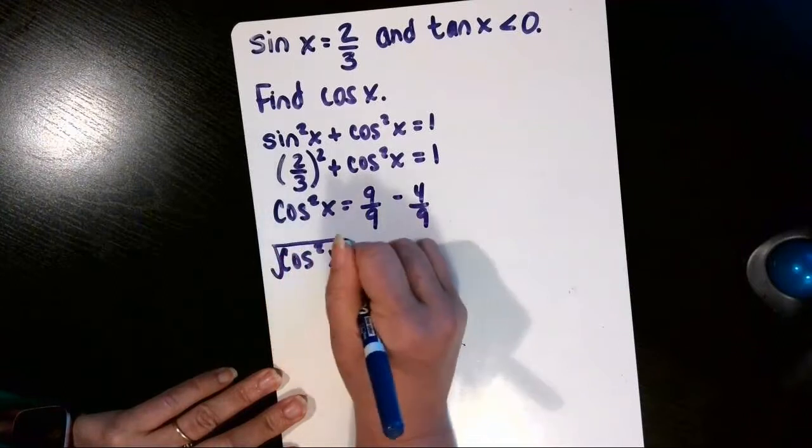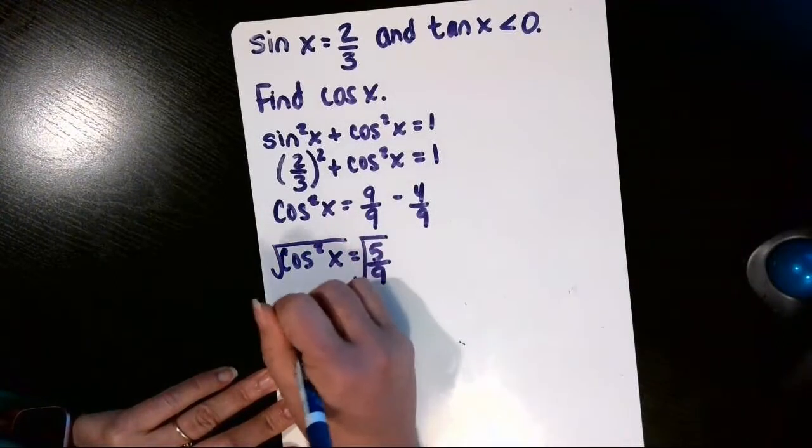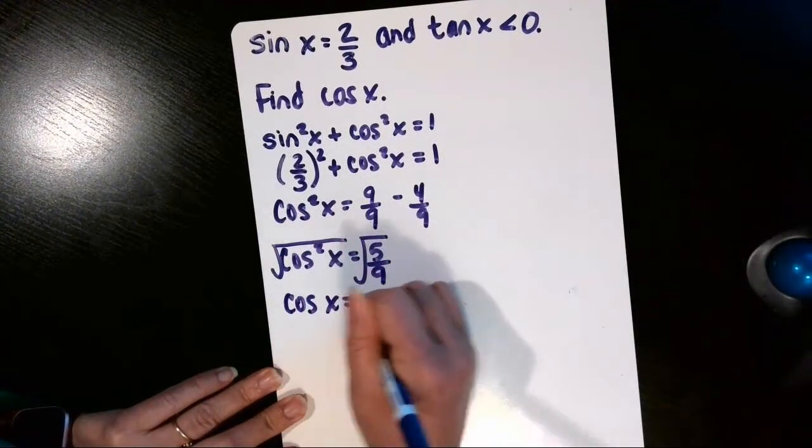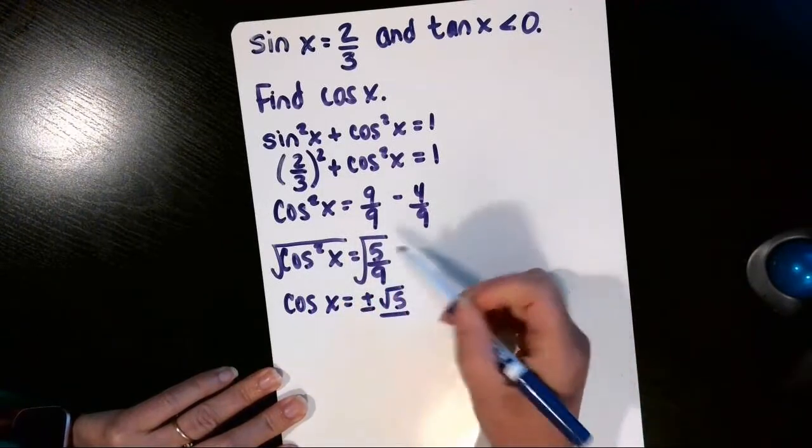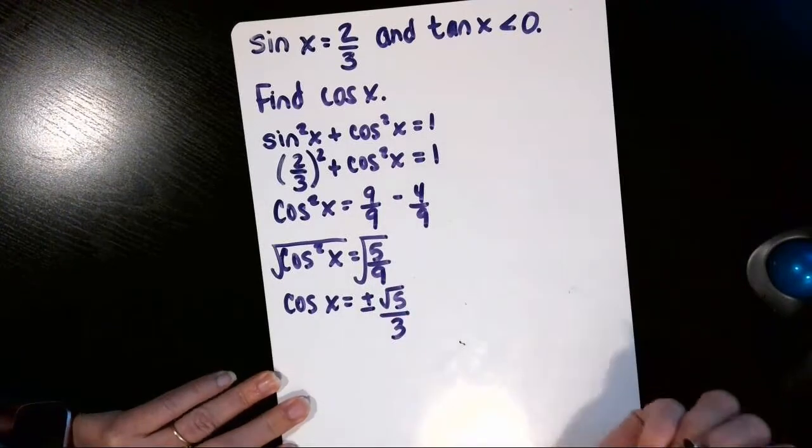Now we're going to square root both sides, and cosine of x is plus or minus the square root of 5 over—and then the square root of 9 is 3.